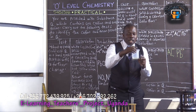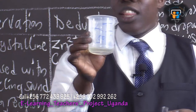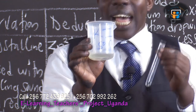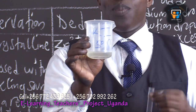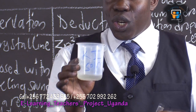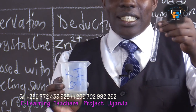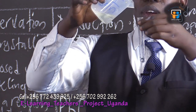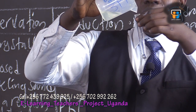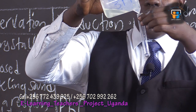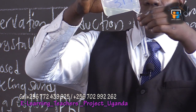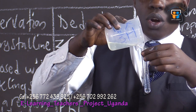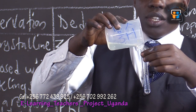This is potassium iodide solution, ladies and gentlemen. Those of you who are watching, you can see KI, standing for potassium iodide. Our solution is colorless. We are going to add potassium iodide and see what we shall observe. We are adding slowly by slowly.